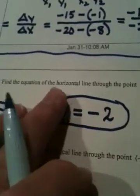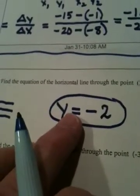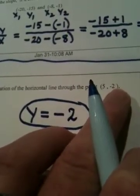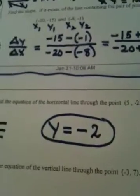And that will always be the case. Horizontal lines will always be y equals, and then you go to an ordered pair on the line, and you pick the y value to put here, and you totally ignore the x value.